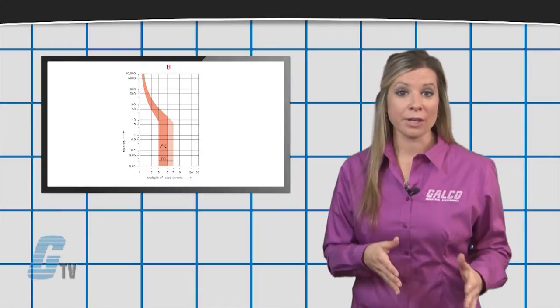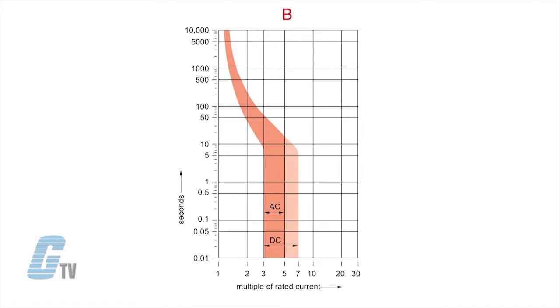A trip curve can be read on an X and Y axis graph, with current on the X axis and time on the Y axis. The inner line is the minimum point where the circuit breaker will open the circuit and the outer line is the maximum value of the circuit breaker's protection.